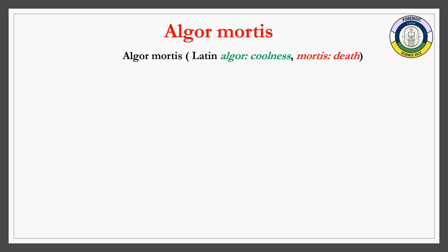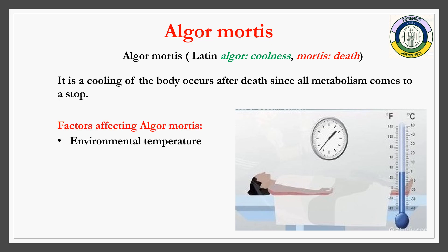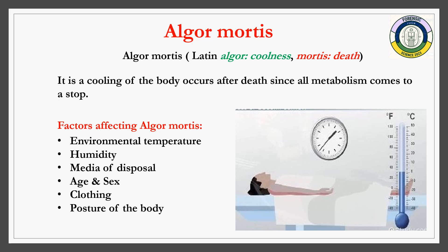Algor mortis: 'algor' is a Latin word meaning coolness and 'mortis' means death. Algor mortis is the cooling of the body after death due to the stoppage of all metabolic reactions. Factors affecting algor mortis include environmental temperature, humidity, media of disposal, age and sex, clothing, and posture of the body.